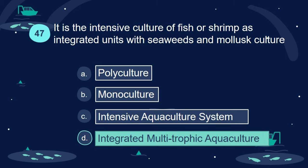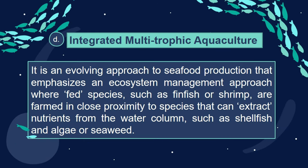Answer: D. Integrated multi-trophic aquaculture. It is an evolving approach to seafood production that emphasizes an ecosystem management approach where fed species, such as finfish or shrimp, are farmed in close proximity to species that can extract nutrients from the water column, such as shellfish and algae or seaweed.